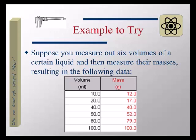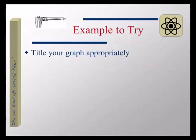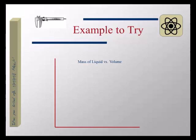It should be 'mass versus volume.' The dependent variable is the mass — that always comes first. Mass versus volume. Volume is independent; volume is the thing that we manipulate. We go into the lab, we control the volume, and the mass depends on it. So you should all have something that looks like 'mass versus volume,' or 'mass of liquid versus volume' if you wanted to be more descriptive.